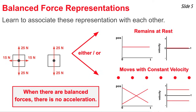One of the skills that will be useful for your success in physics is to be able to associate the various representations of an object's motion to one another. A force diagram shows information about the forces that act upon an object. Here we see two force diagrams, and in both situations the forces are balanced. Balanced forces result in zero acceleration. This means the object is either at rest and staying at rest — associated with a horizontal position-time graph and a velocity-time graph located at v equals zero.